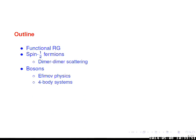We consider spin-half fermions — just a single flavour with two spin states, like four neutrons or spin-half atoms. Then I'll go on to the more interesting but more complicated results in the bosonic sector where we have to face up to the Efimov effect. With four fermions of spin-half without isospin, you cannot make a fully symmetric state, so we're not looking at a four-body bound state — it's dimer-dimer scattering.